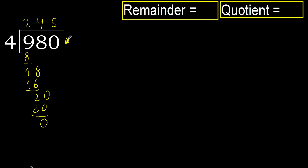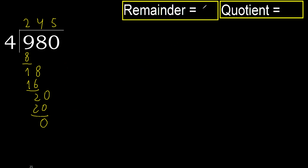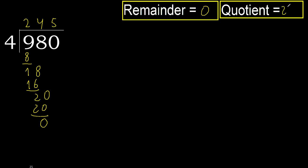That is not a number, therefore finish it. 980 divided by 4 is 245.